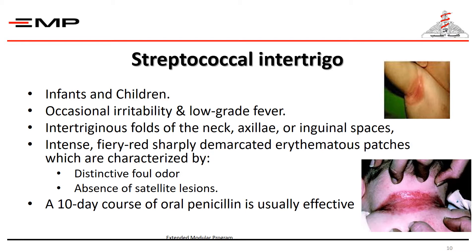Streptococcal intertrigo is a streptococcal infection meaning inflammation of the skin folds, affecting mostly infants and children. The child may present with occasional irritability and low-grade fever, though it may occur without systemic manifestations. The folds of the neck, axilla, or inguinal spaces are affected — most commonly the neck. It presents as intense, fiery red, sharply demarcated erythematous patches with a distinctive foul odor and absence of satellite lesions, which distinguishes it from candidal infection. A 10-day course of oral penicillin is usually effective.